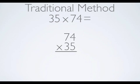I then begin multiplying by taking the 5 from 35 and multiplying it times the 4 from 74. The answer is 20. I place the 0 under the line and regroup the 2 above the 7.